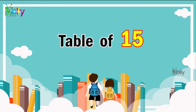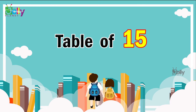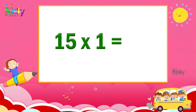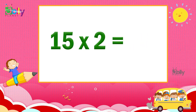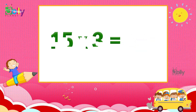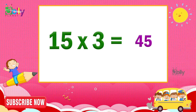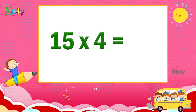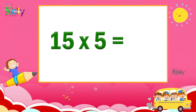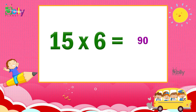Table of 15. 15 1s are 15. 15 2s are 30. 15 3s are 45. 15 4s are 60. 15 5s are 75. 15 6s are 90.